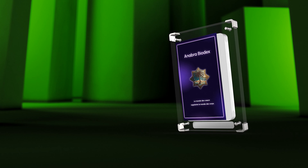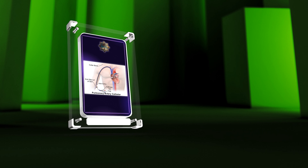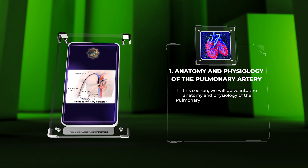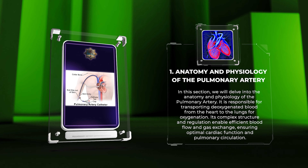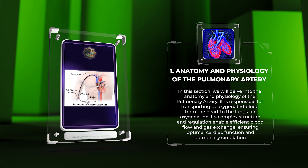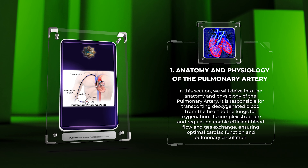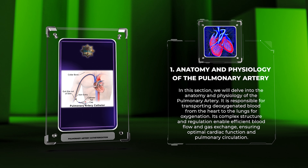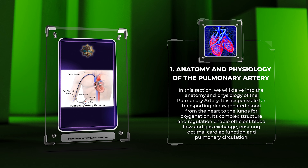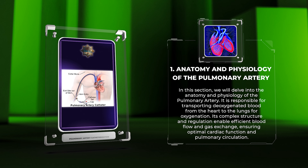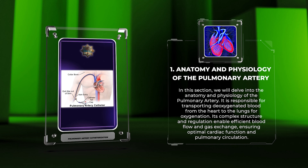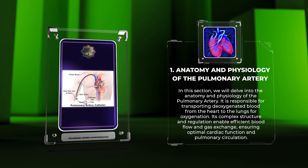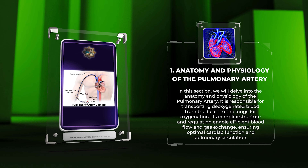In this section, we will delve into the anatomy and physiology of the pulmonary artery. It is responsible for transporting deoxygenated blood from the heart to the lungs for oxygenation. Its complex structure and regulation enable efficient blood flow and gas exchange, ensuring optimal cardiac function and pulmonary circulation.